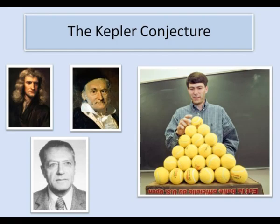Well Kepler asked the question, Newton worked on the problem and in 1831 Gauss showed that the green grocer's arrangement is best if you require that the packing form a regular lattice. But perhaps an irregular packing might be denser. In 1900 David Hilbert included this problem in his list of 23 unsolved mathematical problems that set the agenda for 20th century mathematicians.